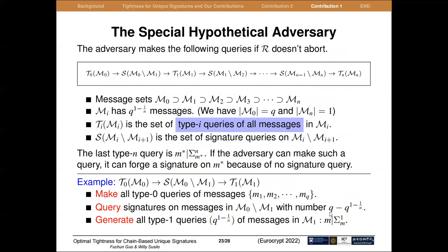We consider a hypothetical adversary attacking as follows. A set of messages M_0 is chosen. Some random subset of messages M_1 is also chosen, satisfying that M_1 has a specific number of messages. This message size setting ensures the error probability is the same no matter how R programs the reduction. The hypothetical adversary first makes all type 0 queries on messages in M_0, and then makes all type 1 queries on messages in M_1. Before this, it makes similar queries on messages in M_0 excluding M_1. The last type 1 query contains a signature on message M_0, and since there is no signature query on message M_0, the adversary can return this as the forged signature.